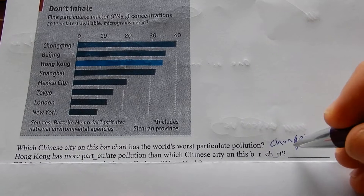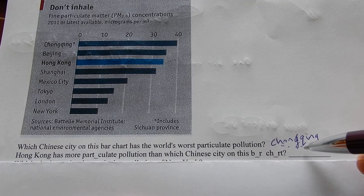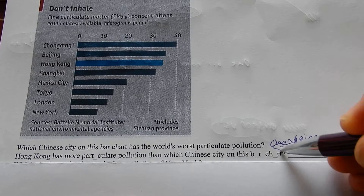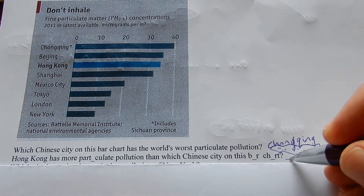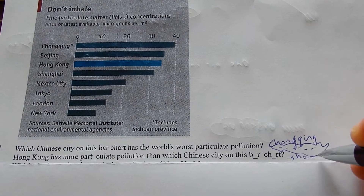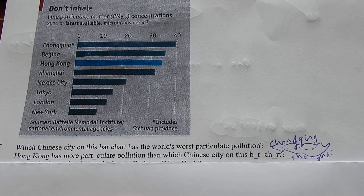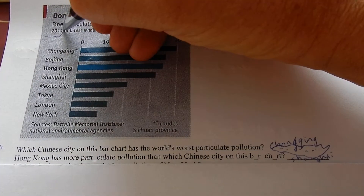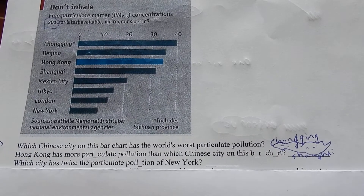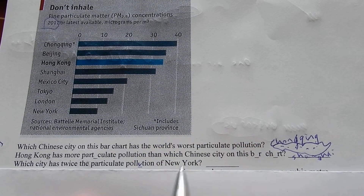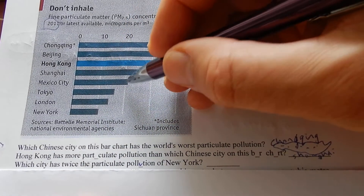Hong Kong has more particulate pollution than which Chinese city on this bar chart? Shanghai. This was 2011 or latest. Which city has twice the particulate pollution of New York? New York is on 10, so twice that — Mexico.